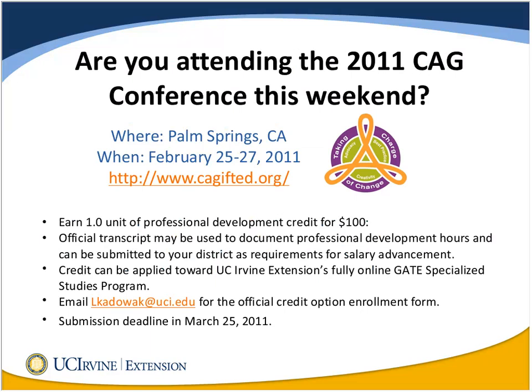This weekend, the California Association for the Gifted, commonly referred to as CAG, is hosting its 49th annual conference in Palm Springs, California. UC Irvine Extension is proud to be a credit provider for this event. To receive one unit of credit, individuals must attend the CAG conference, submit an official enrollment form with $100 payment, and write a two-page reflection paper summarizing what you learned and how you will apply it to your teaching practice. The deadline for all submissions is March 25, 2011. This credit can be used for professional development salary advancement and applied toward UCI Extension's GATE Specialized Studies program. I will also be attending the conference and will have enrollment forms available.